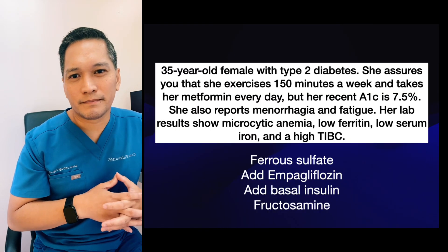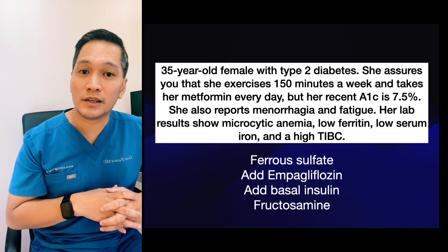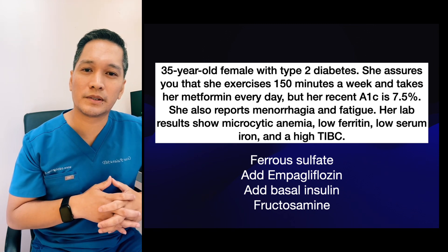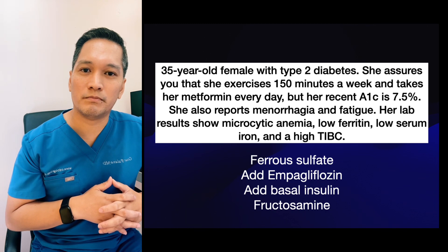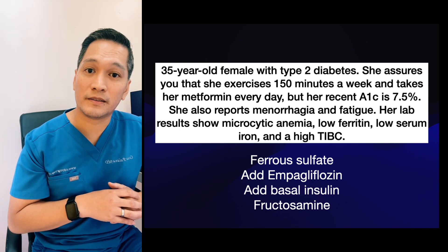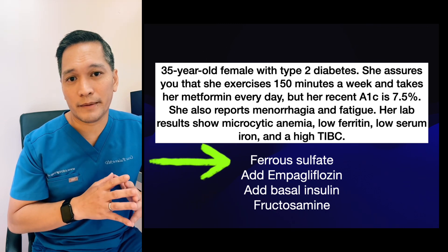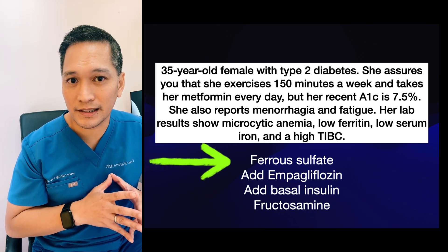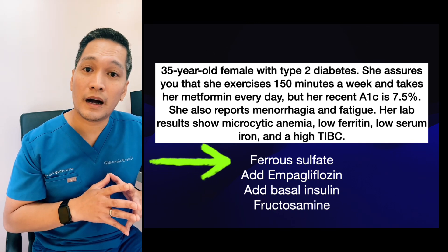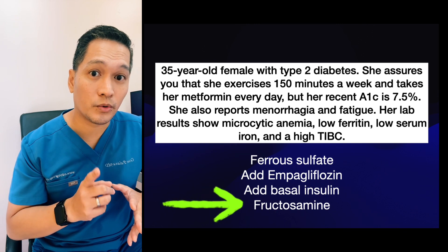Why is this important? Consider a 35-year-old female with type 2 diabetes who comes to your office. She exercises 150 minutes a week and takes her metformin every day, but her recent A1c is 7.5%. She also reports menorrhagia and fatigue. Her labs show microcytic anemia, low ferritin, low serum iron, and a high TIBC. Instead of adding another oral diabetic medication, we recognize she has iron deficiency anemia and her A1c of 7.5% is likely falsely elevated. The approach is to treat the underlying iron deficiency anemia and recheck the A1c.